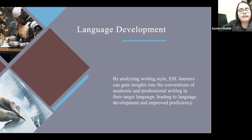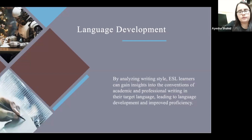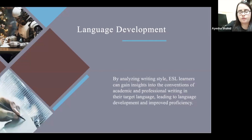Language development: by analyzing the writing style, ESL learners can get insights into the conventions of academic and professional writing in their target language. If they find English too difficult, or if they're at the A1 or A2 level, they can incorporate feedback from the native language to improve English in a better way — getting feedback in their native language and then incorporating that feedback successfully in English, leading to language development and improved proficiency.